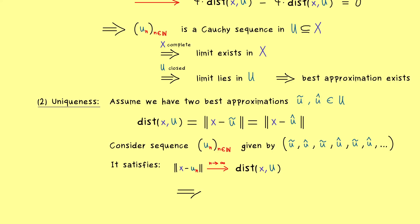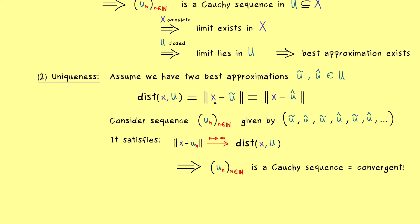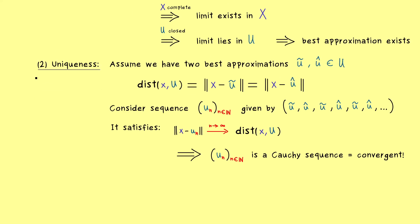In particular, we have shown it has to be a Cauchy sequence, which means it's also a convergent sequence. However, the only possibility that such an alternating sequence here is convergent, is only given if it's actually a constant sequence. And there we have it. Two best approximations have to coincide and the uniqueness is proven.